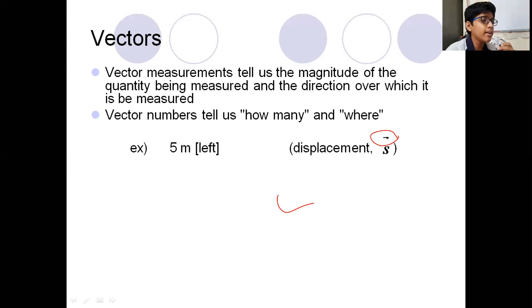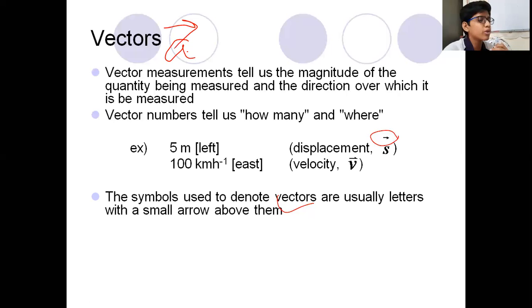Example: 5 meters in the left, so this is called displacement. In vector quantities, when we measure vector quantities, like I am measuring a vector quantity A, I keep a bar on it, an arrow symbol on this. This represents that it is a vector. And 100 km per hour in the east, then it is called velocity. We will discuss about this more and more in the coming slides. The symbols used to denote vectors are usually letters with a small arrow above them. This is what actually is about vectors.